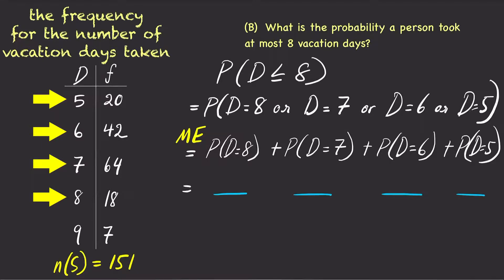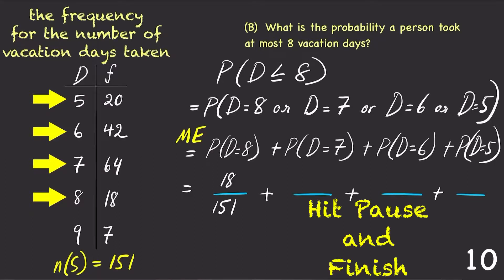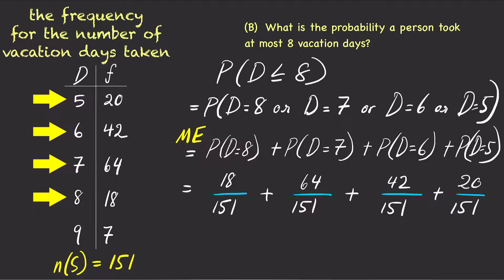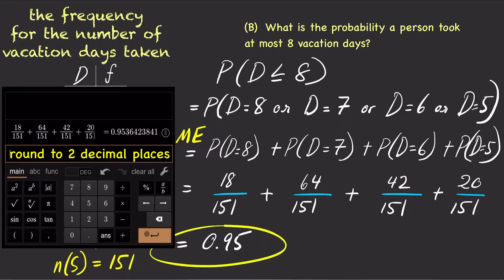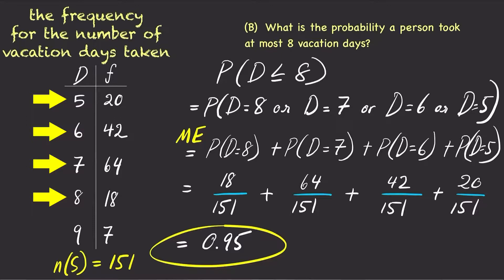For d equals 8, the probability is 18 over 151. Take a minute and fill in the probabilities for the rest. Now, use your calculator to plug in these numbers, and the answer is 0.95. In other words, the probability a person took at most 8 vacation days is 95%.